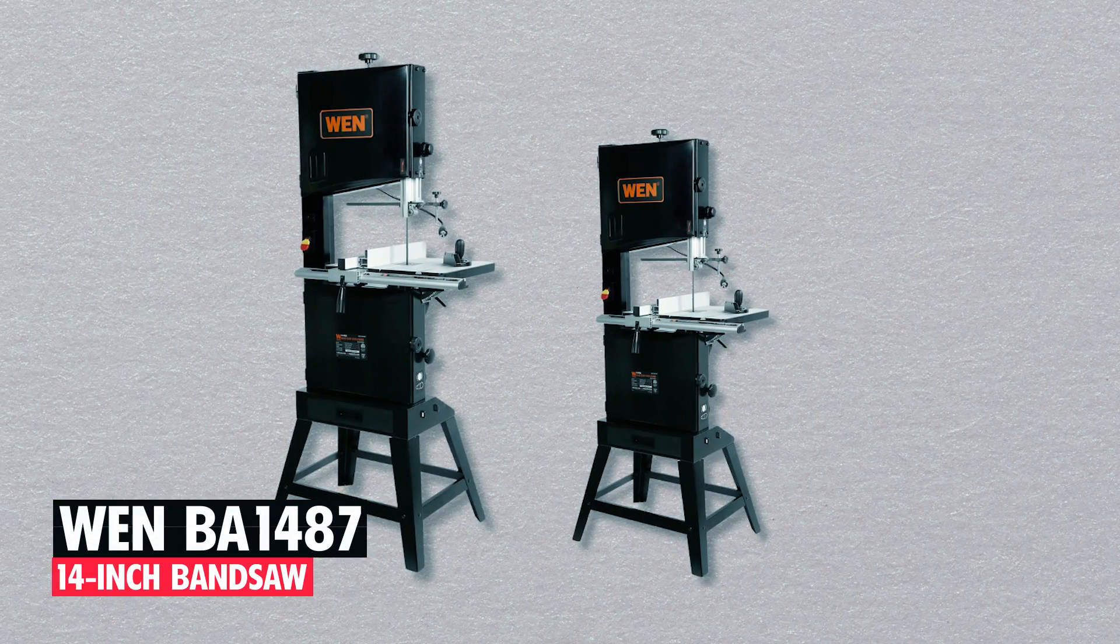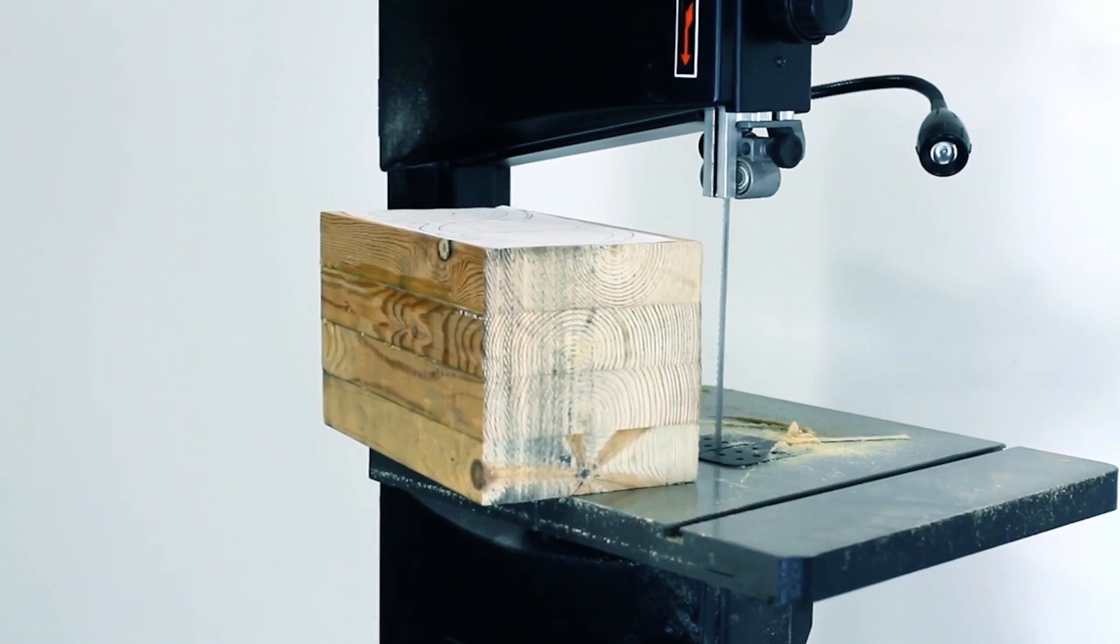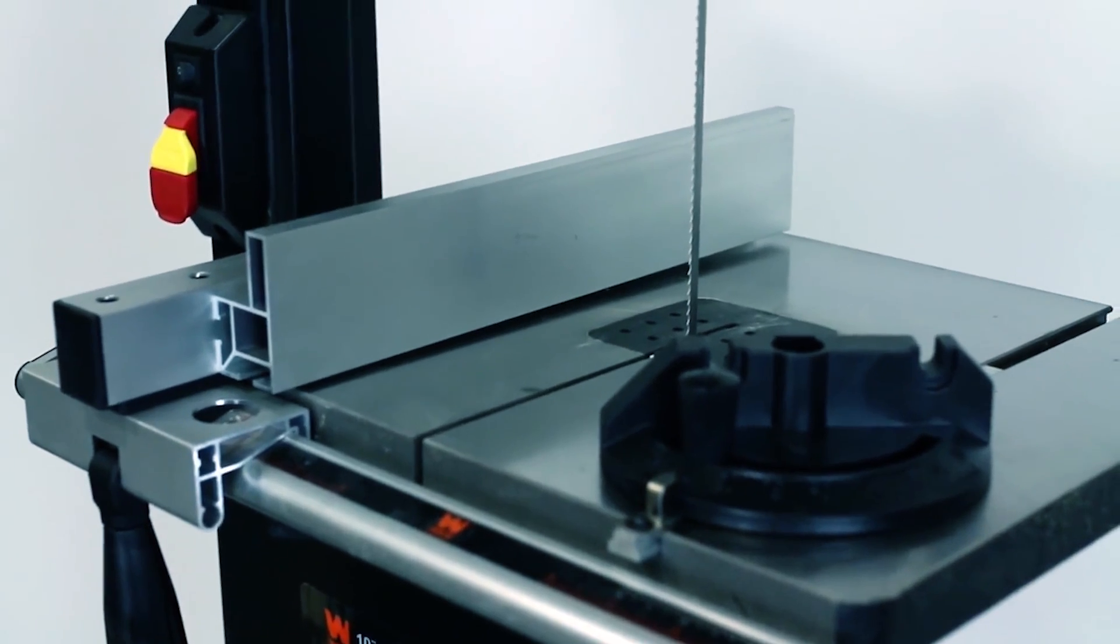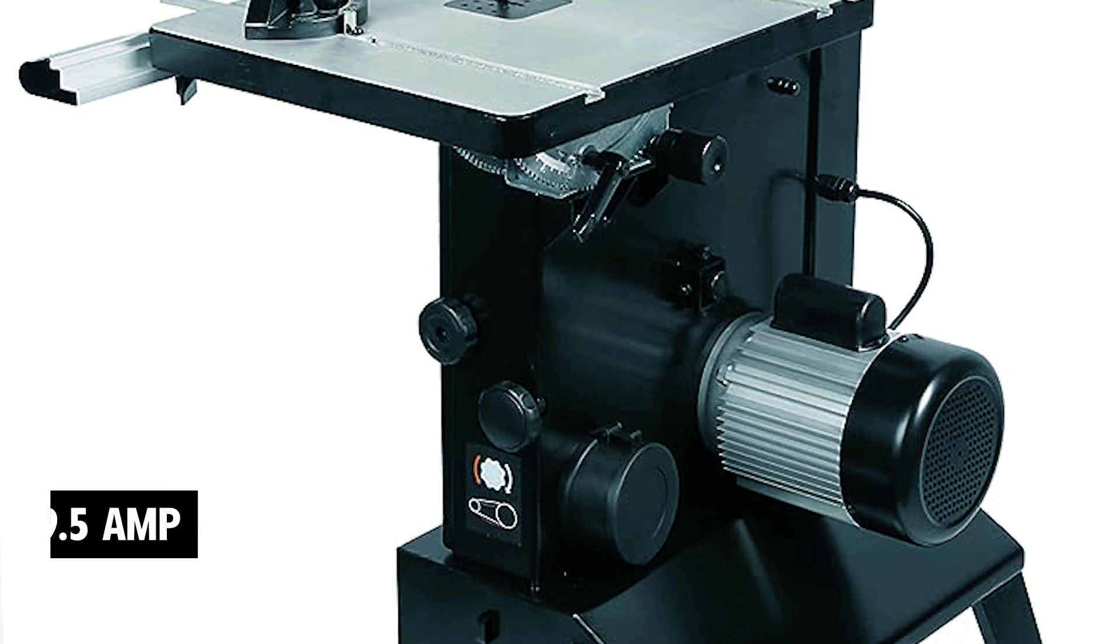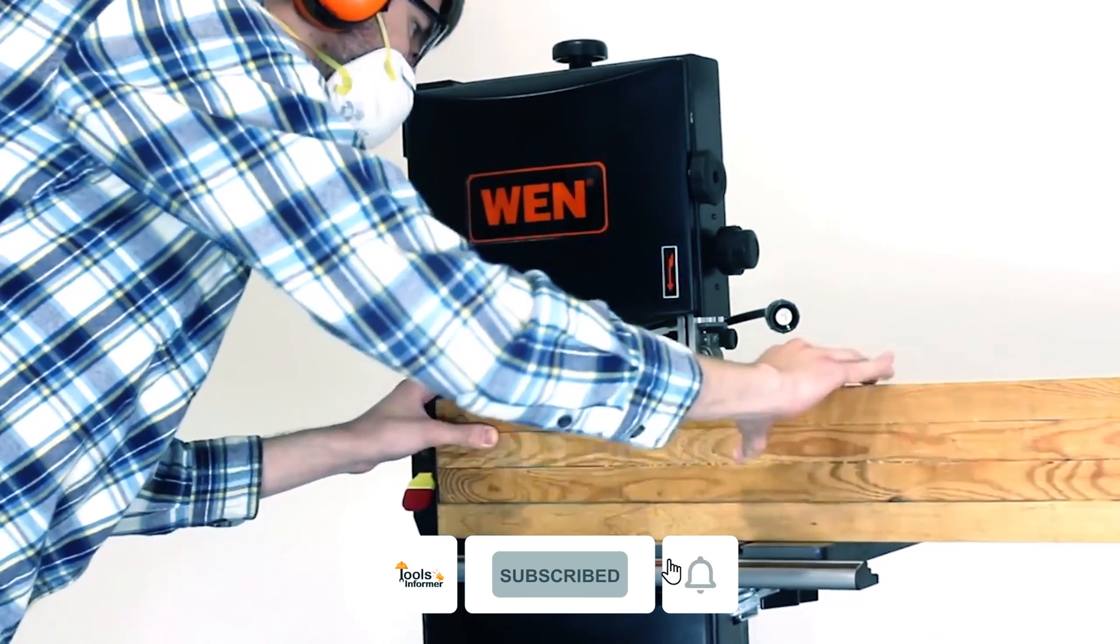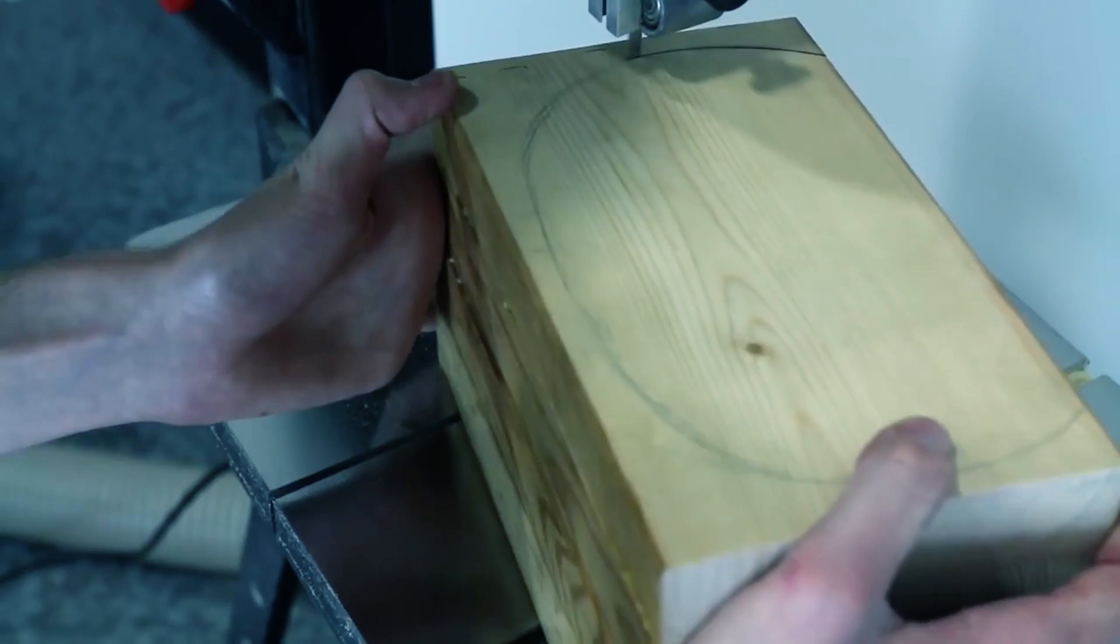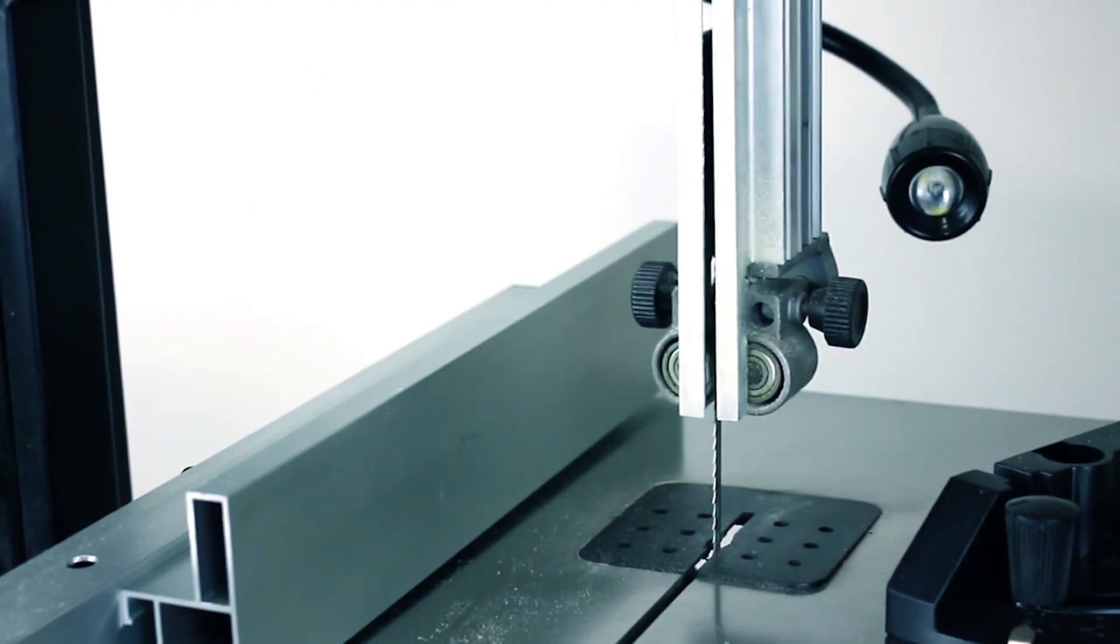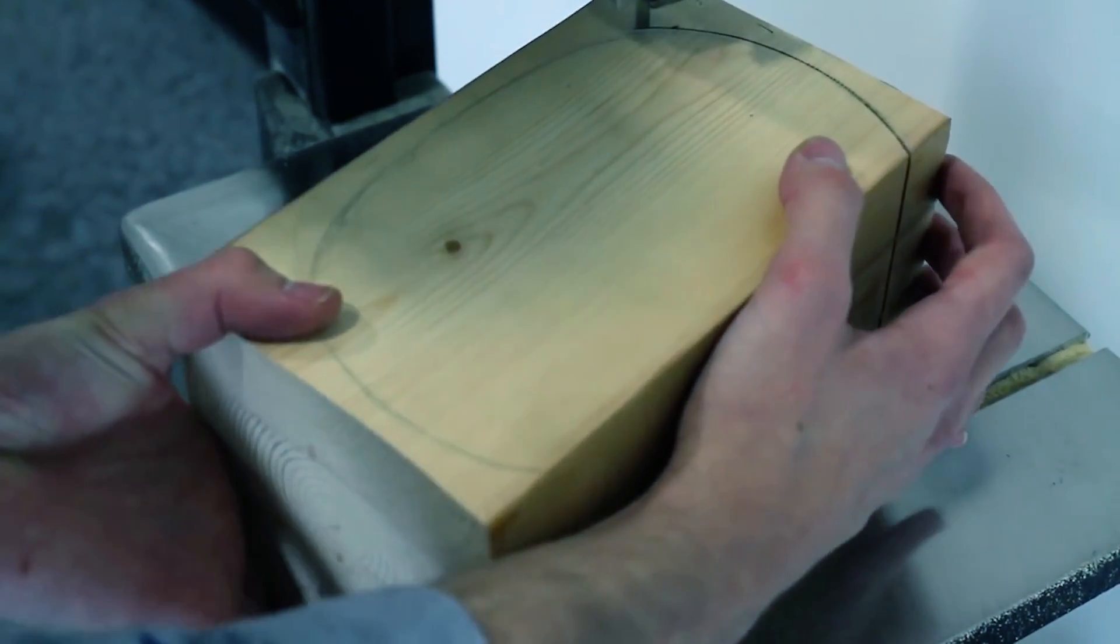WEN BA-1000 487 14-inch Bandsaw. The WEN BA-1000 487 14-inch Bandsaw is a woodworking powerhouse, boasting a 9.5-amp motor and a 13-3/8-inch throat for handling substantial projects. With dual-speed options, 1420 or 3280 fpm, and compatibility with blades from 1/8 to 1 inch, it's versatile for detailed work or efficient resawing.